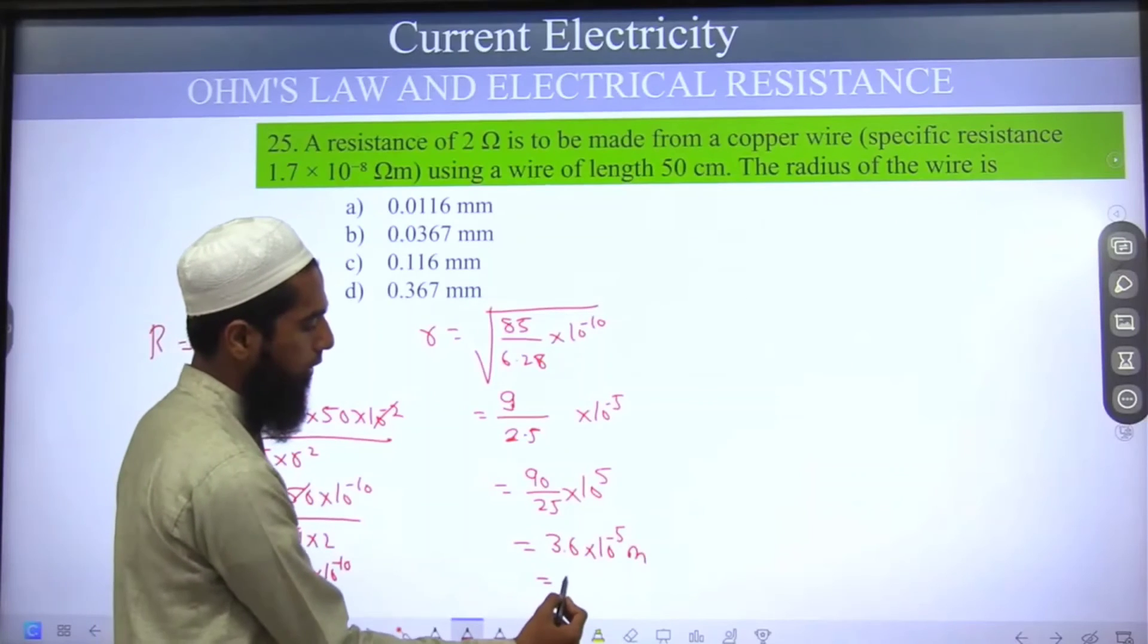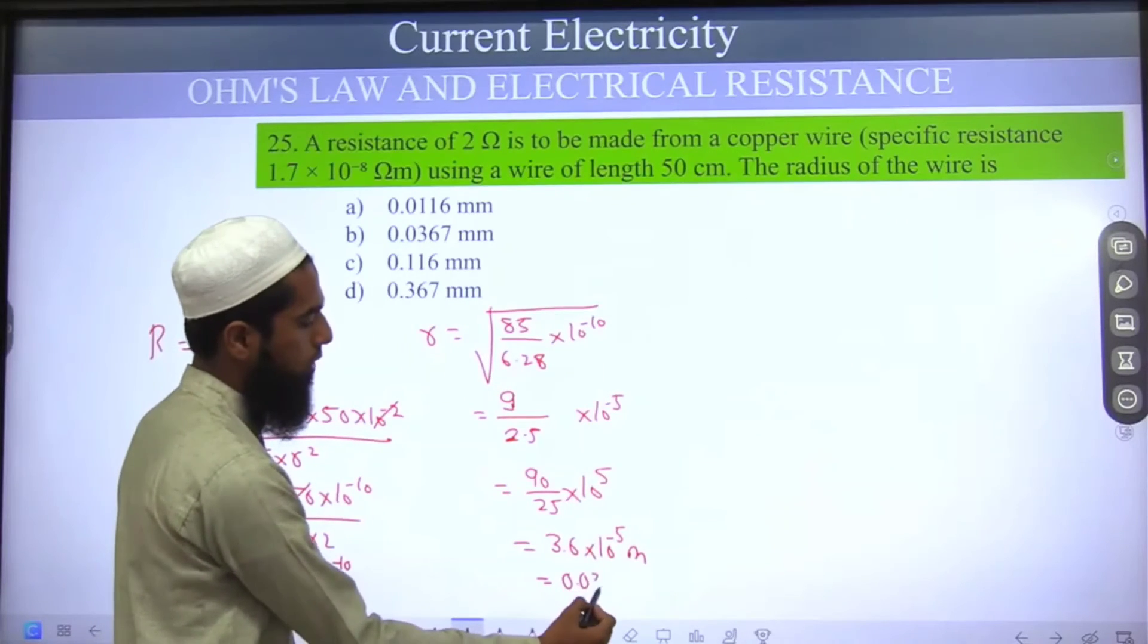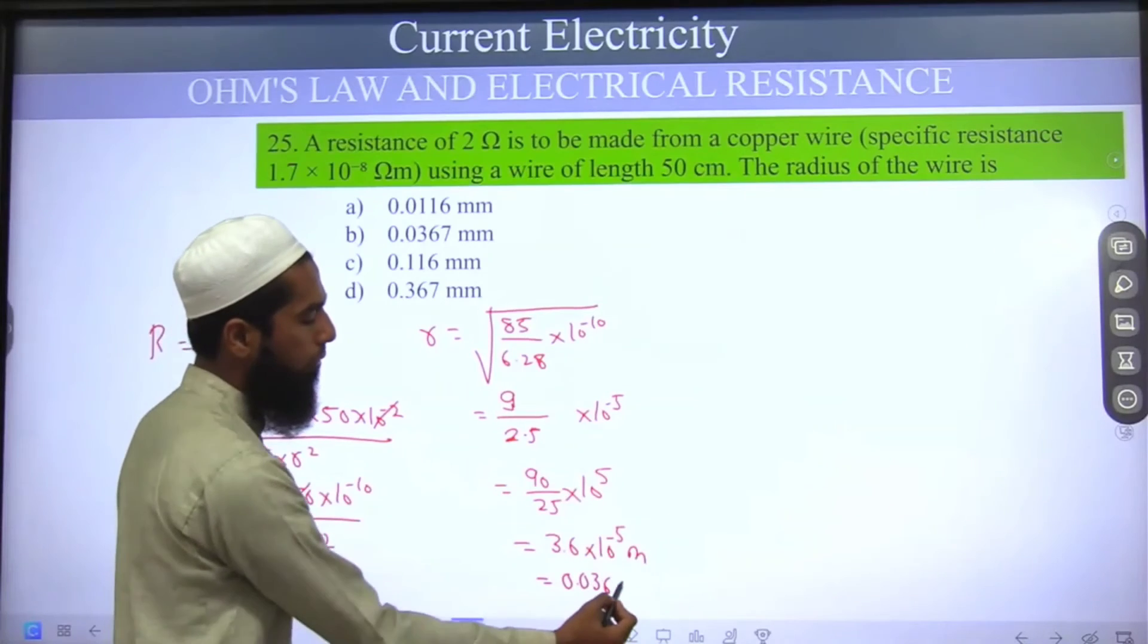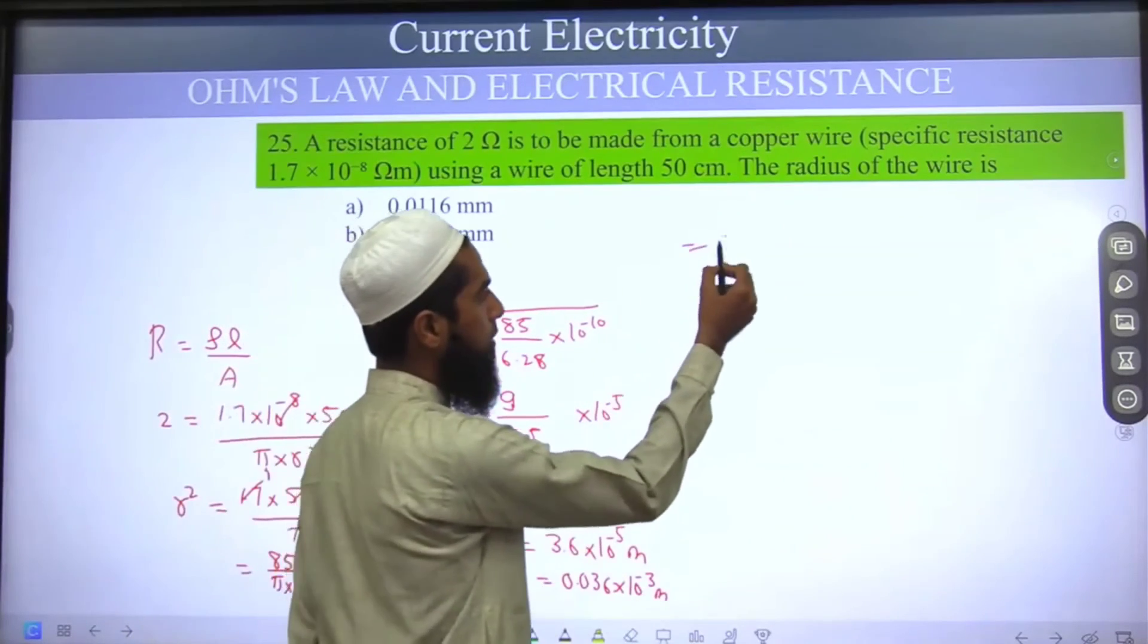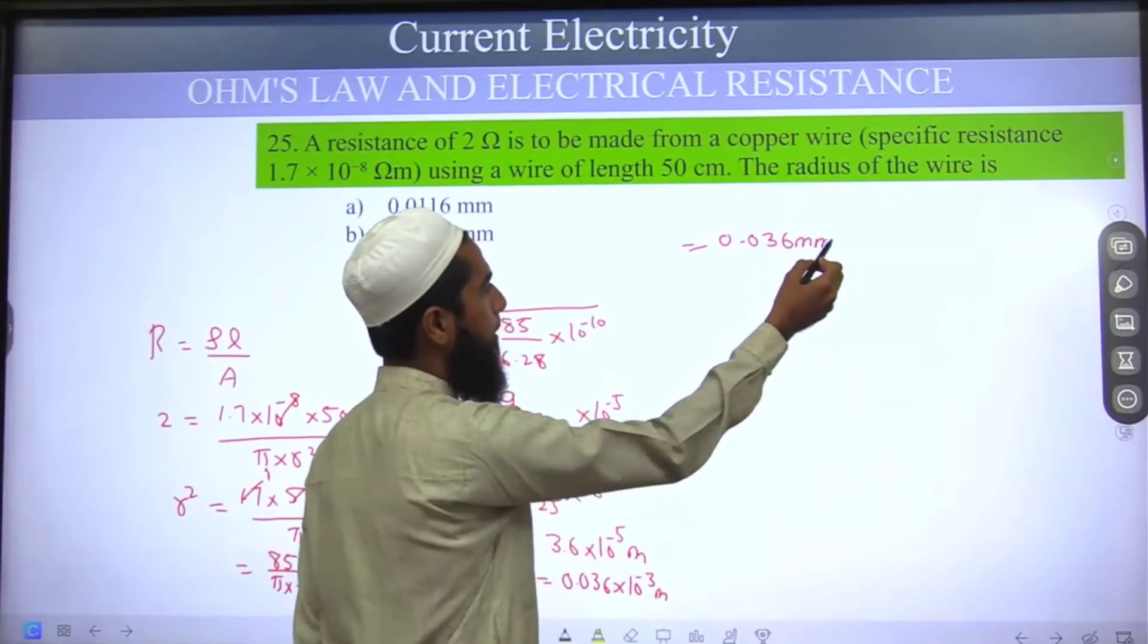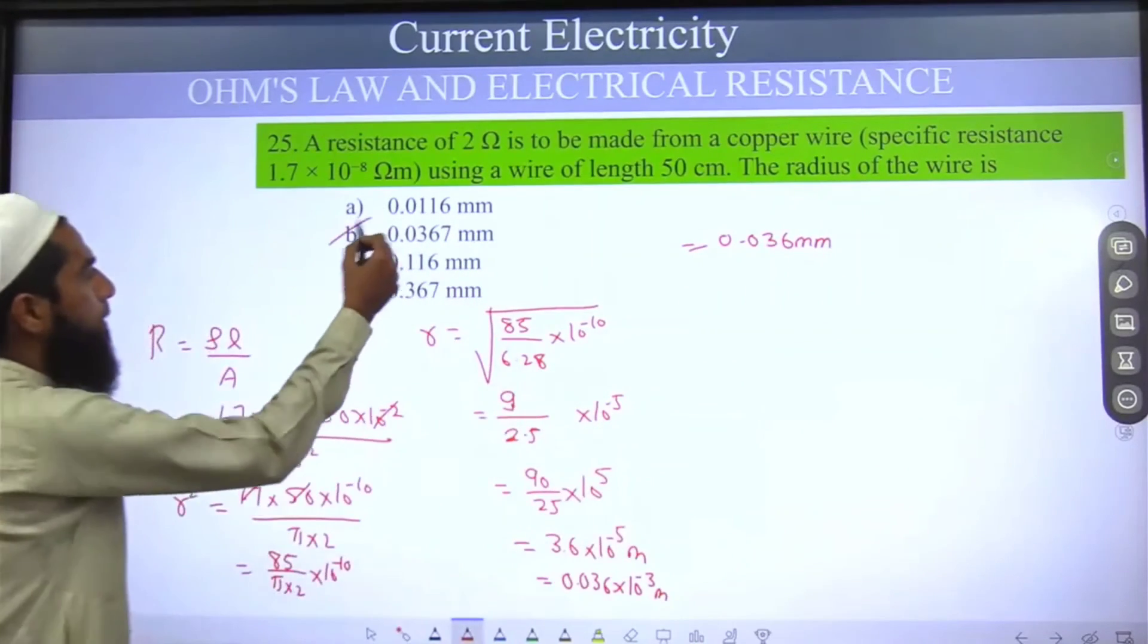So the answer is 0.036, moving the decimal 1 and 2 places back, giving 10 power minus 3, meaning the answer is 0.036 mm. Option B is correct.